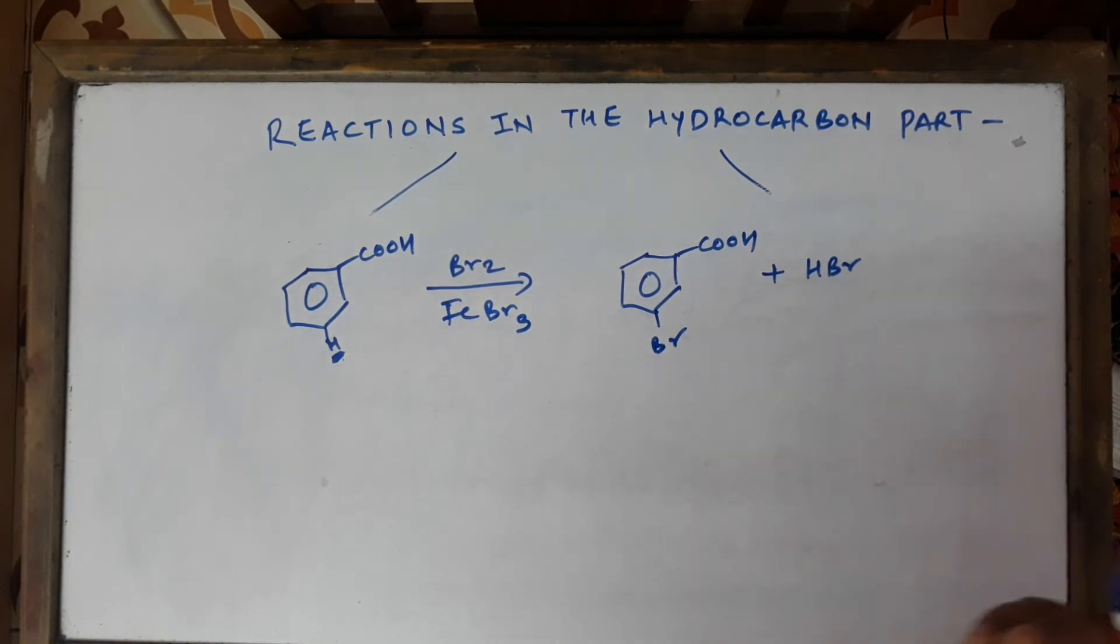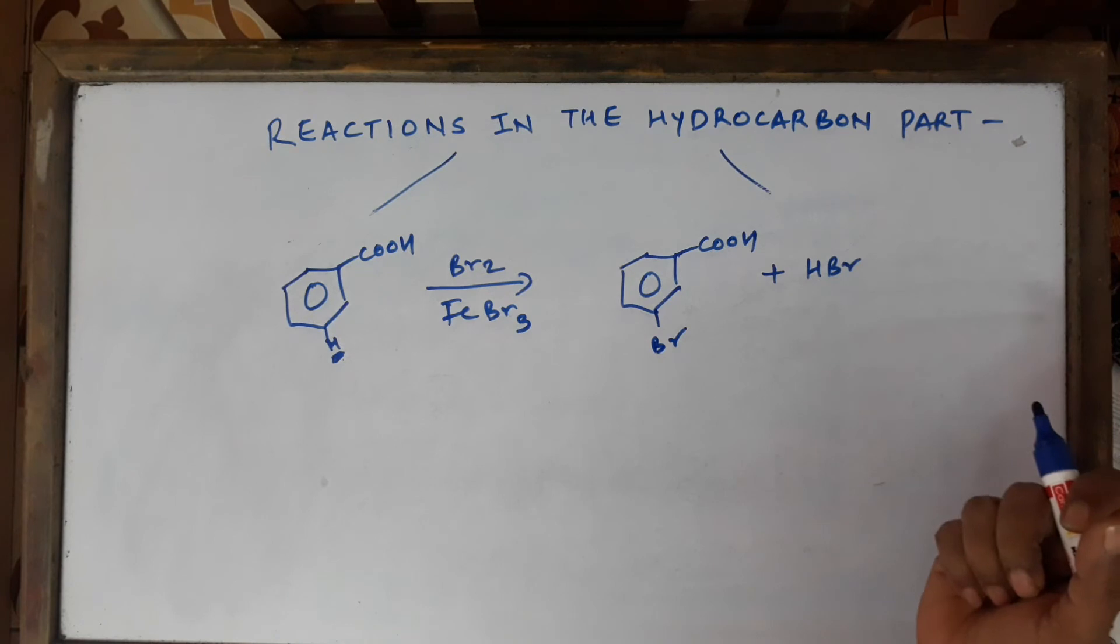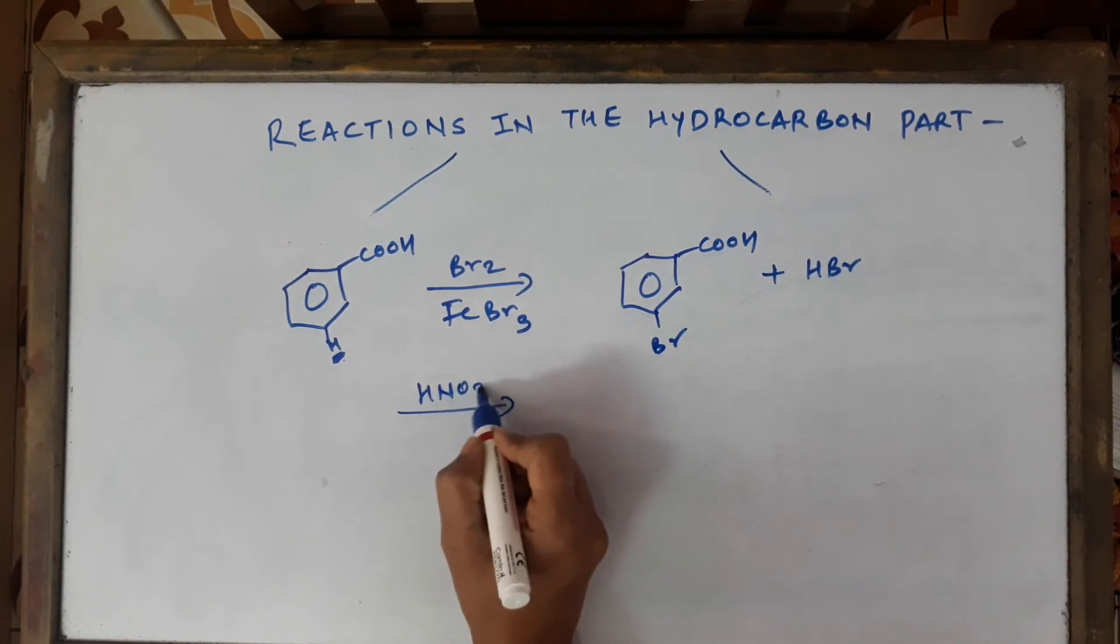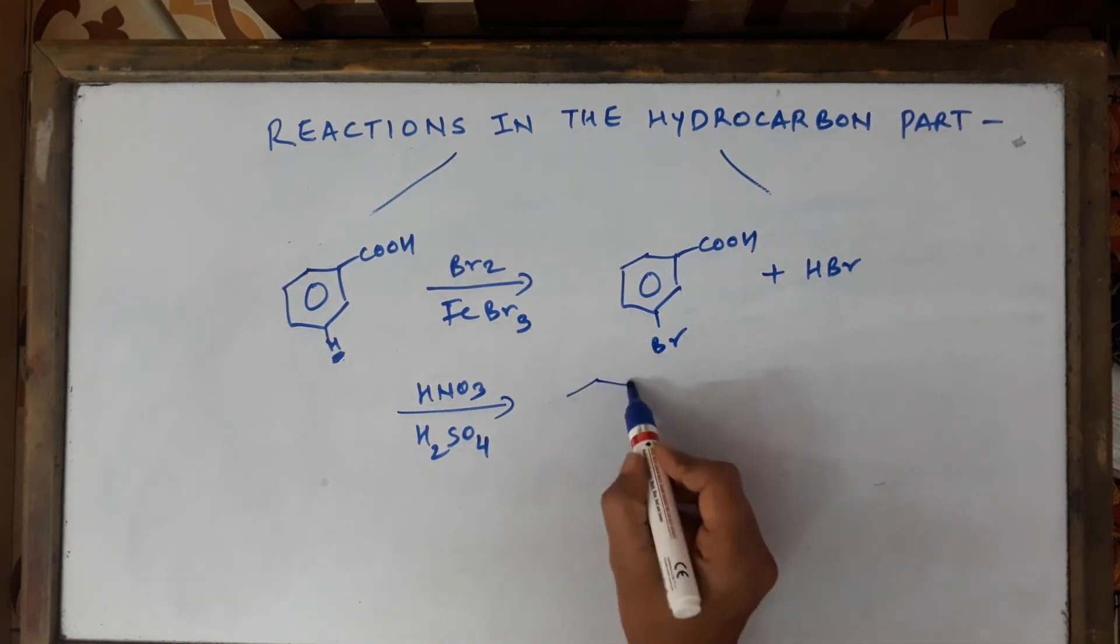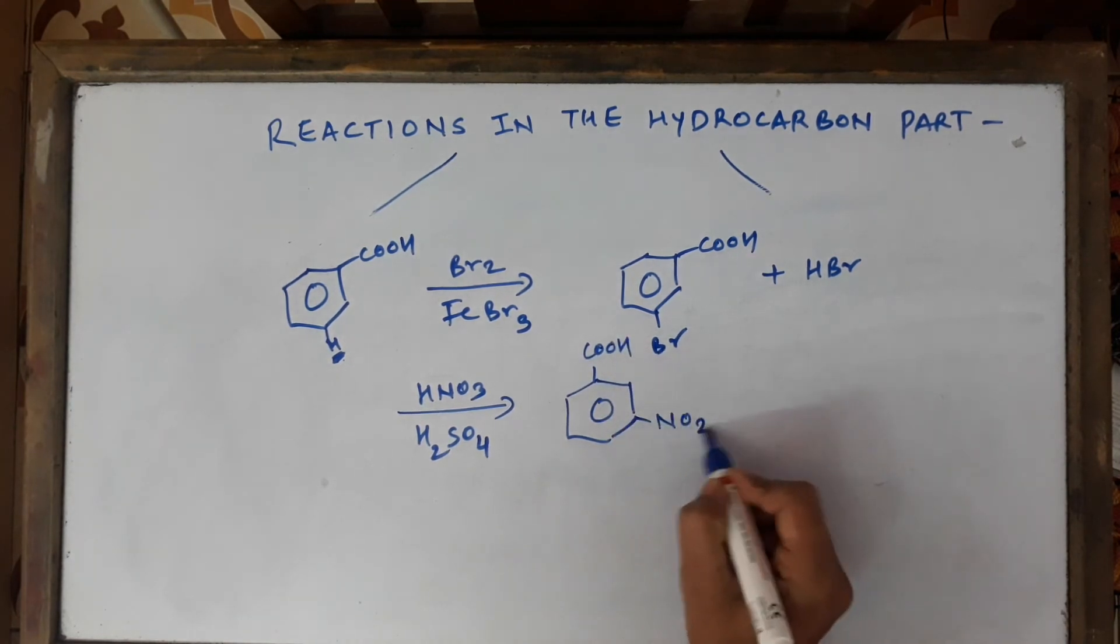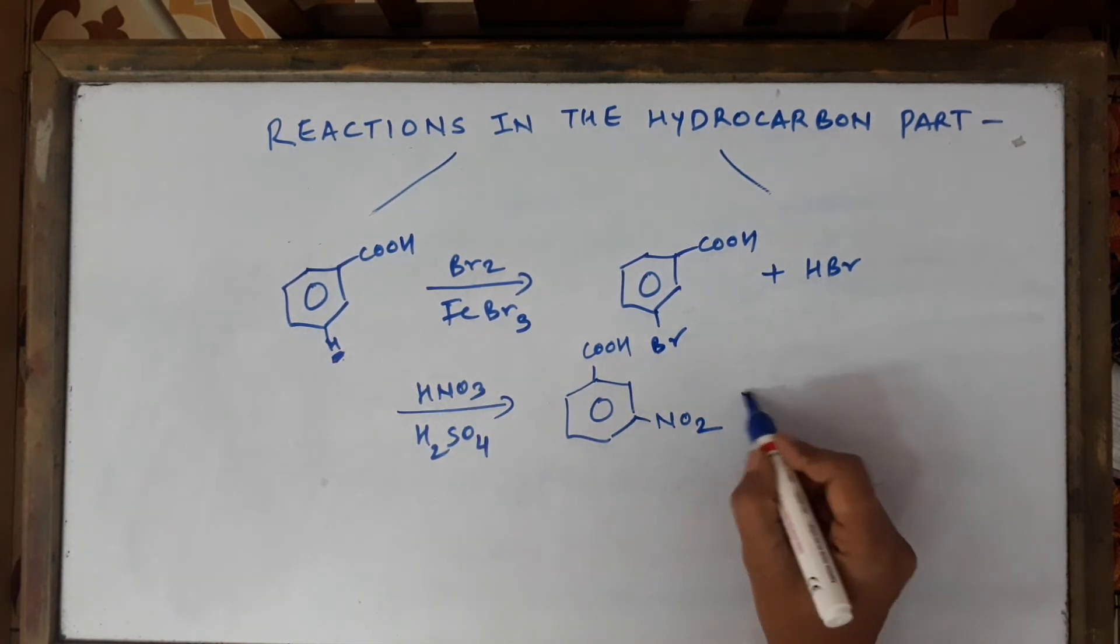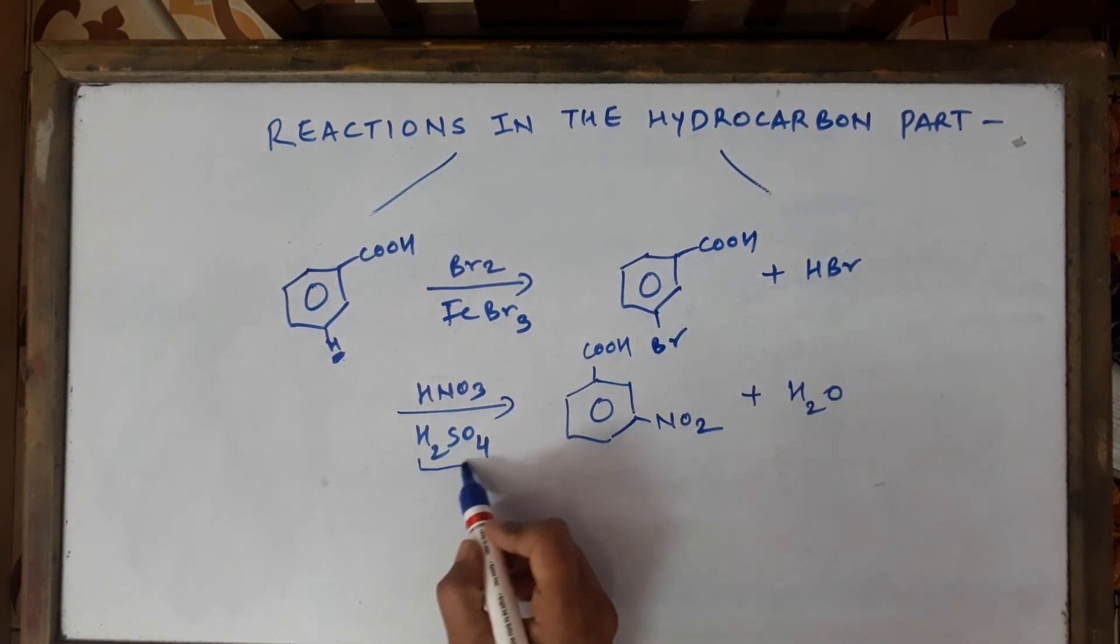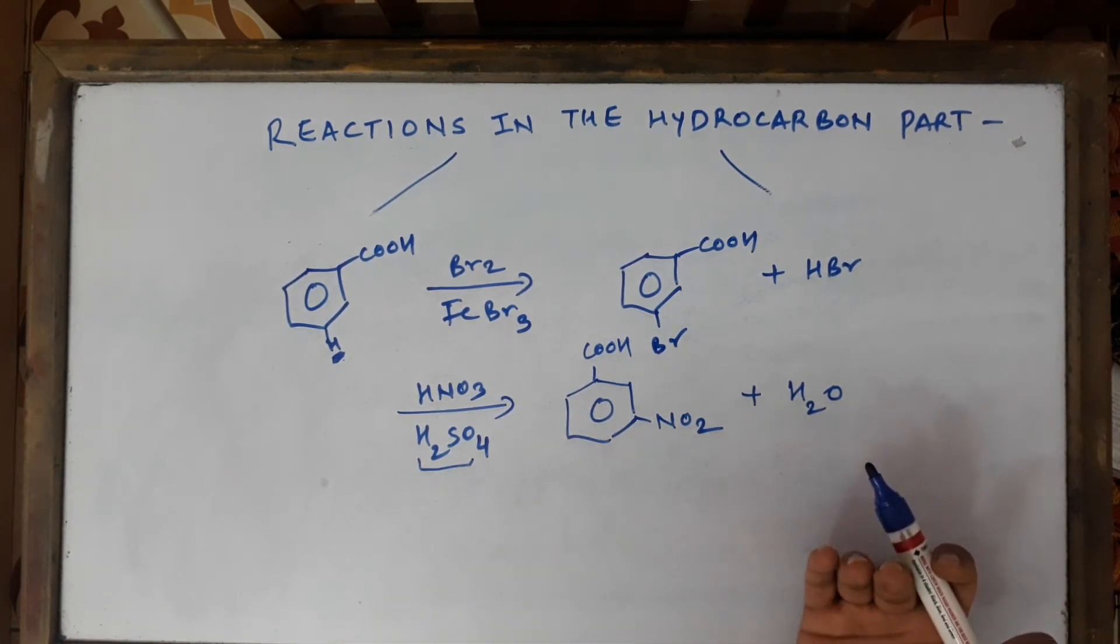Then we talk about the next reaction, nitration, where we have to use nitrating mixture: HNO3 concentrated plus concentrated H2SO4. Here also the product is going to be the same. There is nothing very challenging. It's the same thing we have been doing in all the chapters. NO2 plus gets attached over there, H plus comes out. H plus goes with the OH minus of HNO3, and we get water as the byproduct. H2SO4 acts as the catalyst because it helps in the generation of the electrophile NO2 plus and also helps in the removal of water.